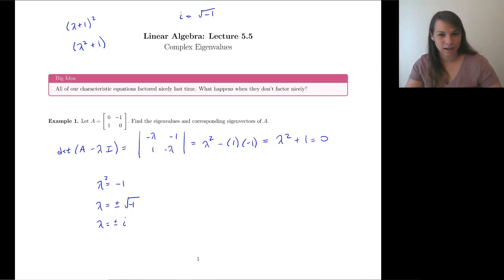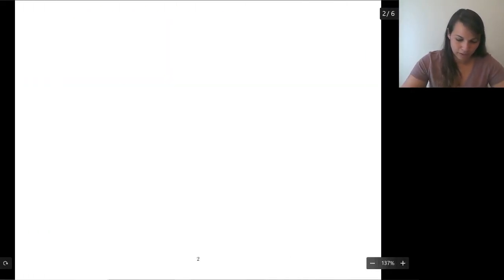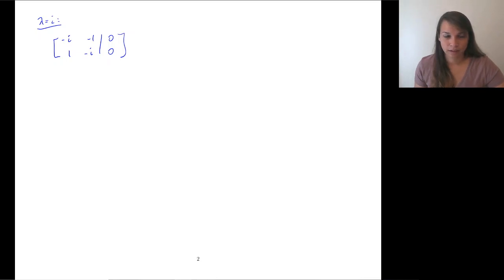So now, λ equals, or λ² equals negative 1. So then λ equals plus or minus square root of negative 1. λ equals plus or minus i. Okay, remember you have to do your plus or minus, because when you take the square root, you get plus or minus. We found our eigenvalues. Let's see if we can find our eigenvectors.